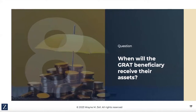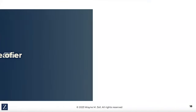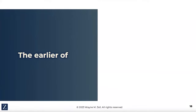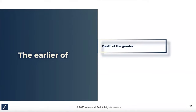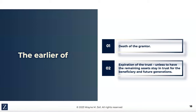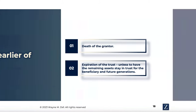When will the GRAT beneficiaries receive their assets? In two ways: number one, on the earlier of the death of the grantor — which is not a good fact pattern — or at the expiration of the trust, unless you want to keep those assets in trust for the beneficiaries so that it stays in trust after the beneficiaries are entitled to receive it.